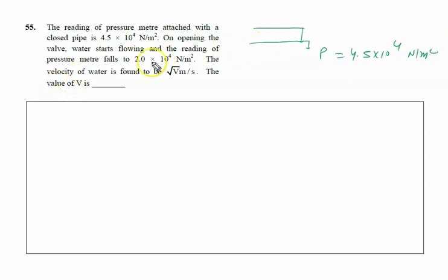On opening the valve, water starts to flow. Initially velocity is 0. When the water starts flowing, the reading of the pressure meter falls, so it is P₁ and it is P₂. P₂ is given by 2 × 10⁴ N/m².